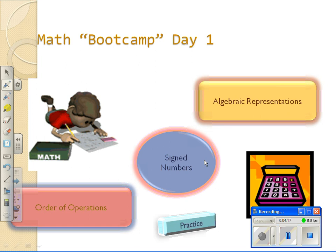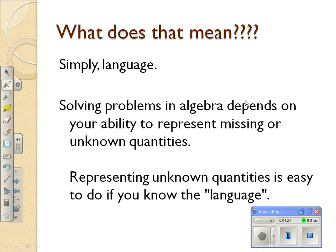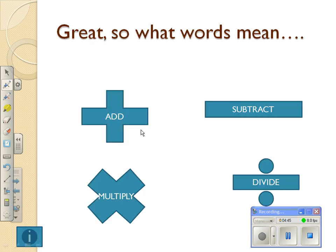Turn your paper over now to the side entitled Algebraic Representations. What does that mean? In one word, algebraic representations means language. We're going to take English and turn it into math. Take math and turn it into English. Solving problems requires you to represent missing or unknown quantities. So, let's take apart the language. It's easy if you can understand the language. What do these words mean? Let's take them one by one.